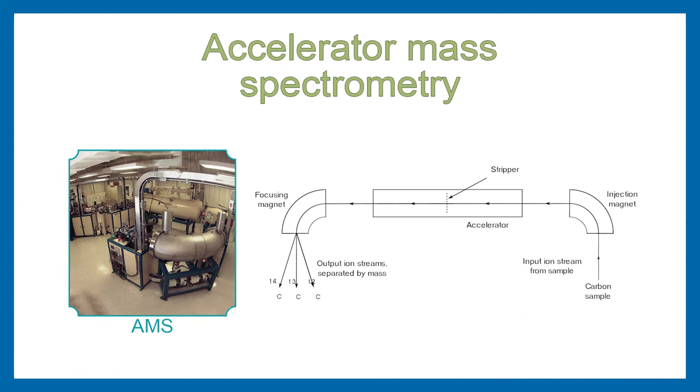The accelerated mass spectrometry is a more efficient method. With it, you can use much smaller samples because it can count 2% of all carbon-14 atoms in one hour, reaching the same accuracy as beta counting.